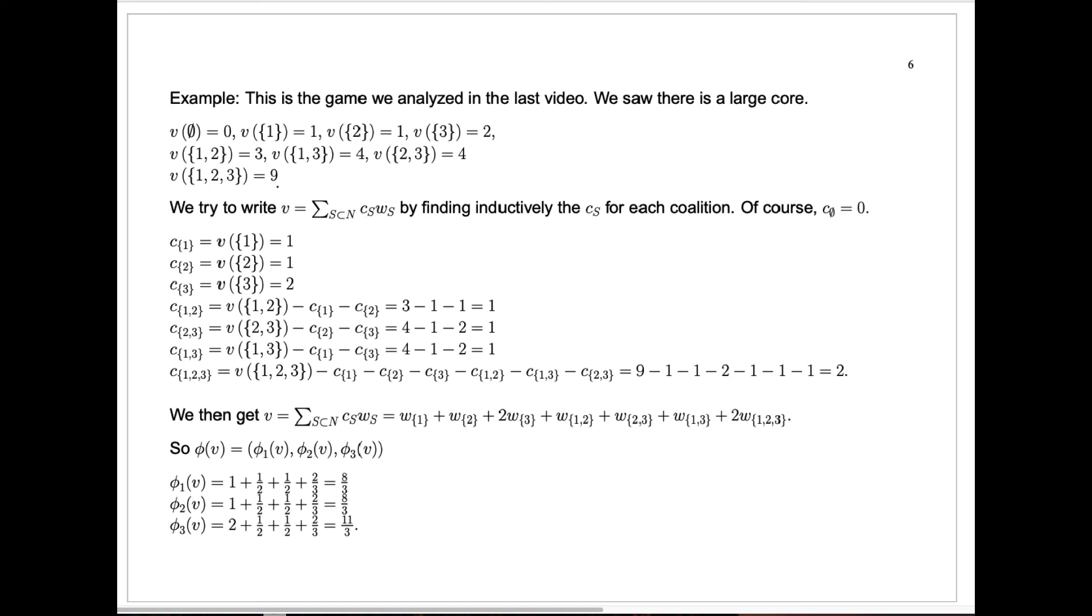The way we can compute the Shapley value is to decompose this characteristic function v for our game into a sum of special characteristic functions w sub s. And we're going to do this by finding inductively what these constants c sub s are for each possible coalition in the game. Now, if it's a large game, of course, this could be a lot. Here we have just three players. There are only eight possible subsets. We're going to ignore the empty set because c sub φ is zero. So we really have only seven computations to make.